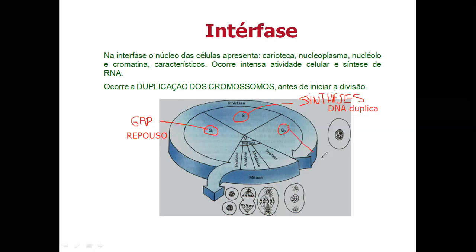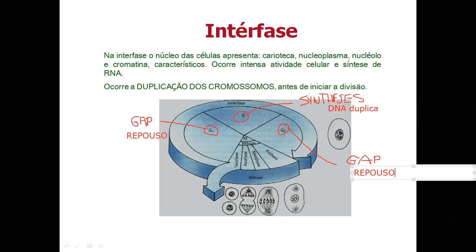E aí, G2 é um gap de novo, outro repouso — também não significa que a célula está totalmente parada, mas o DNA não está se duplicando. Nesses dois repousos, duplicam principalmente ribossomos, as organelas celulares, RNA, e proteínas para passar para a outra célula. Então, no S é que duplica o material genético. A gente sempre enfatiza na intérfase o S, que é a duplicação do DNA. A intérfase é dividida em G1, S e G2.